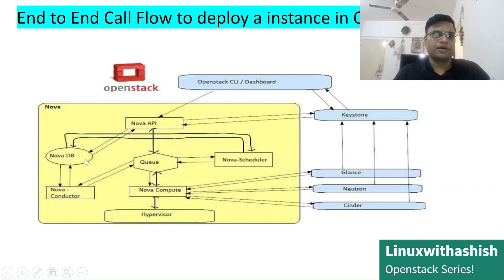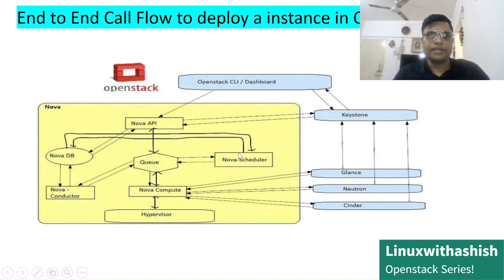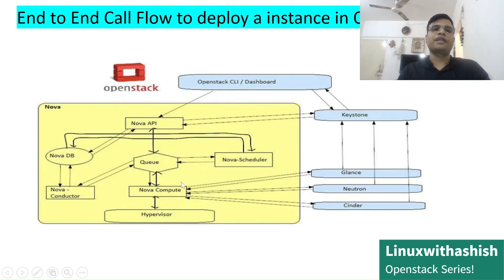After getting confirmation from Keystone, the Nova API registers the request from the user to launch an instance in its Nova database. The Nova database communicates with the Nova Scheduler through a REST API call to take the request from the queue. The Nova Scheduler takes the request and assigns a host ID to the instance. Nova Compute then picks the resource from the queue and sends it to Nova Conductor, asking it to provide server instance and flavor details. Nova Conductor provides these details back through the queue.